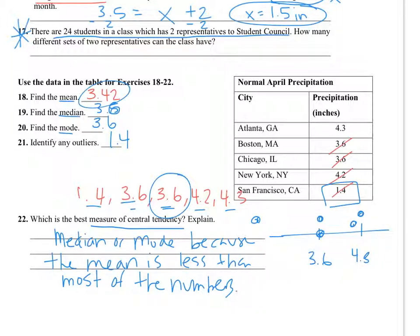Are any of these numbers? I mean, this is more than 3.42. This is more. This is greater. This is greater. The only one that's not greater is 1.4. So 1.4 affects the mean. An outlier affects the mean.